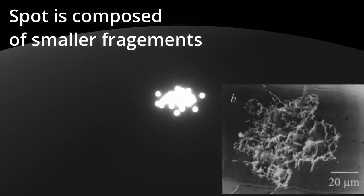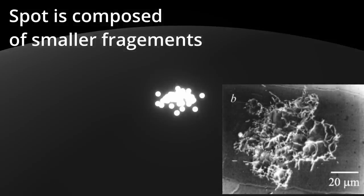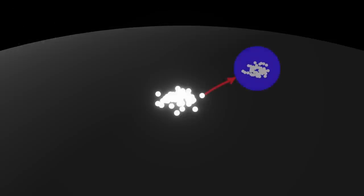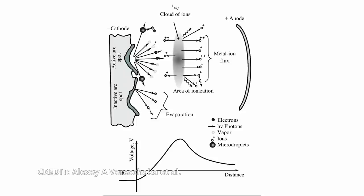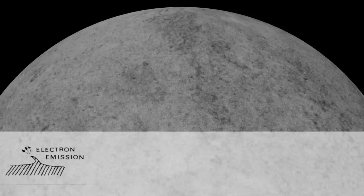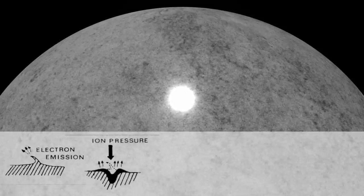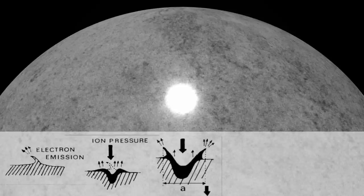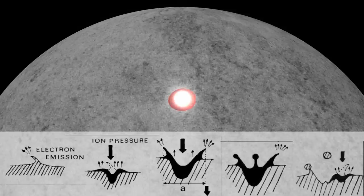Vacuum arc cathode spots consist of fragments or cells, which may also be described as emission sites. No conclusive evidence of a truly elementary spot structure has been provided, and therefore even smaller physical substructures may exist. The onset of electron emission and plasma generation can be described as the ignition of an emission site. Ignition occurs when the actual local field strength exceeds a critical field value, depending on the cathode material, nano and microscale surface geometry, as well as dielectric layers, particulates and other field-enhancing conditions.